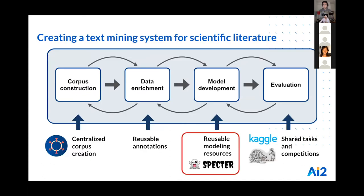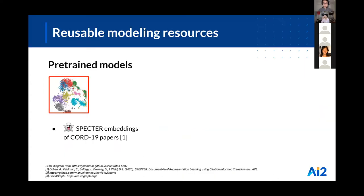Now I'll turn it over to Kyle, who will talk about modeling resources and shared tasks. AI models are expensive to train. One way to cut costs is to pre-train a model and share it with others. One common form of this is document embeddings, which allow you to take papers such as CORD-19 papers and turn them into vectors such that similar documents appear close together in space. Documents with similar fields of study or research themes will be clustered together. SPECTER is one method of doing this.